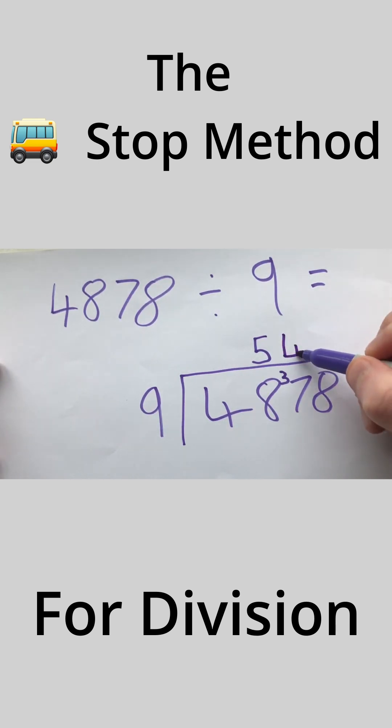And the number that we've got left is one. 36 and 37, the difference is one. Carry that over. How many nines going to 18? That's exactly two. So the answer is 542 remainder 2.